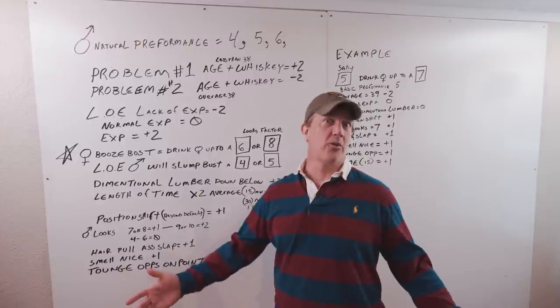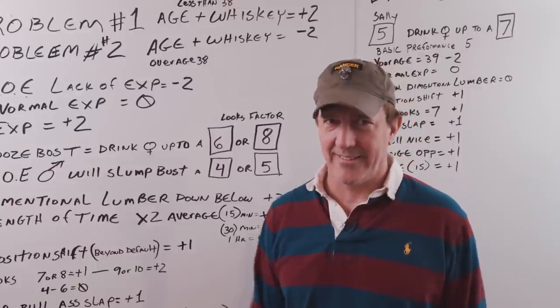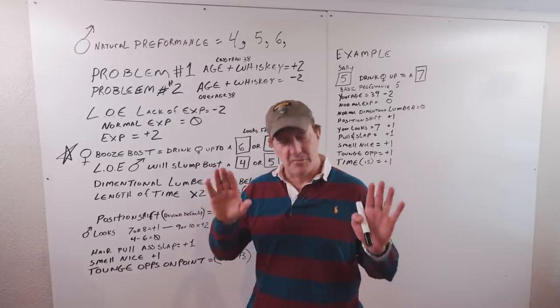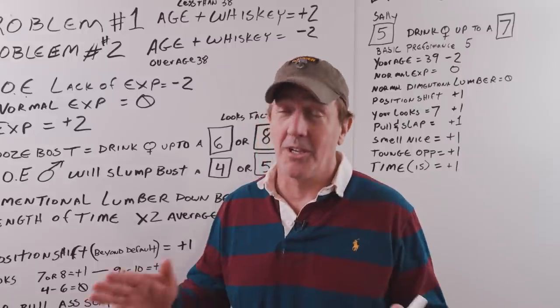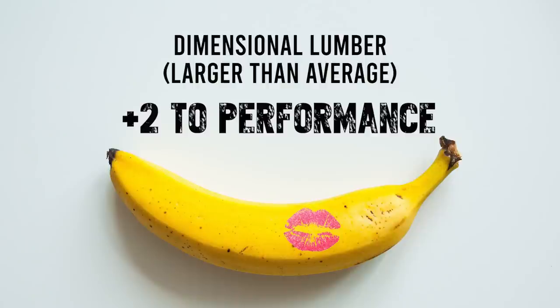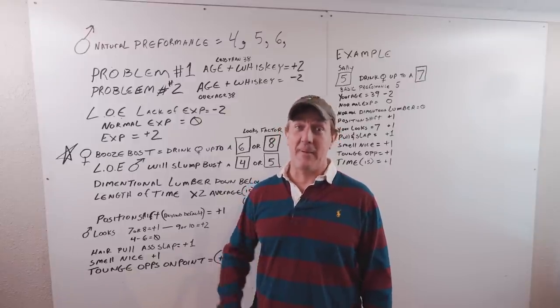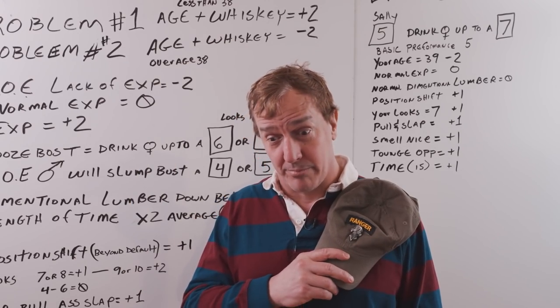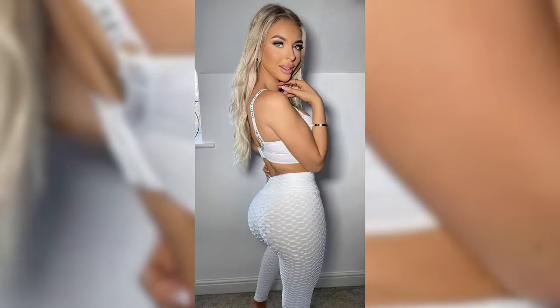Speaking of Only Fans, the next thing on the list: dimensional lumber. Do I need to explain this? Dimensional lumber is best explained this way. Most dudes they're packing a two by four. Dimensional lumber occurs when you're packing four by four, two by eight, it's a six by six. You get the drift. And for the ladies out there that just have to have the six by six, taps the 21 for your blown out dead whistle sack. Speaking of scorched girth, this will give you a plus two.